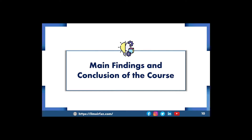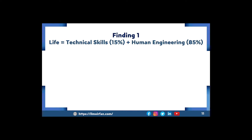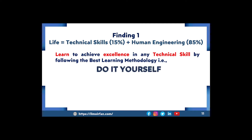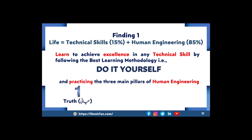Let's move to the main findings and conclusion of this course. Finding one: life is equal to 15 percent technical skills plus 85 percent human engineering. So, learn to achieve excellence in any technical skill by following the best learning methodology — do it yourself — and practicing the three main pillars of human engineering: truth, honesty, and justice.